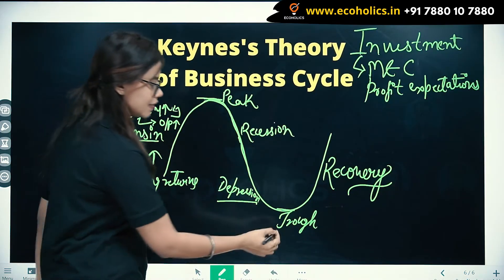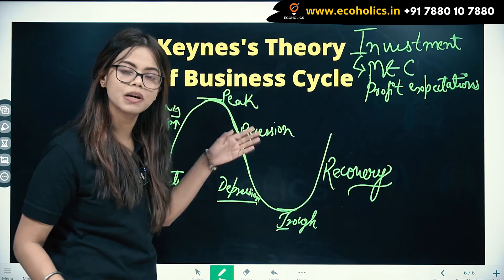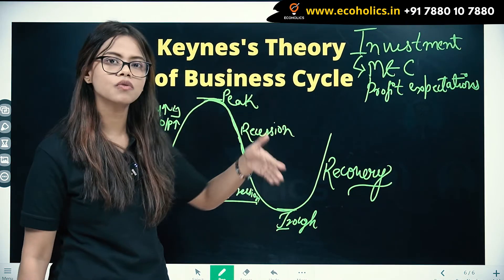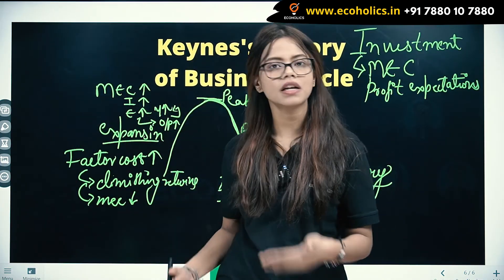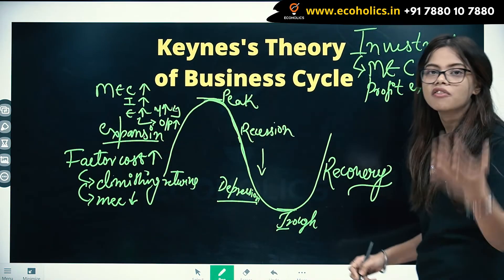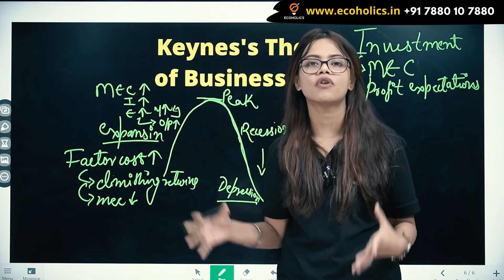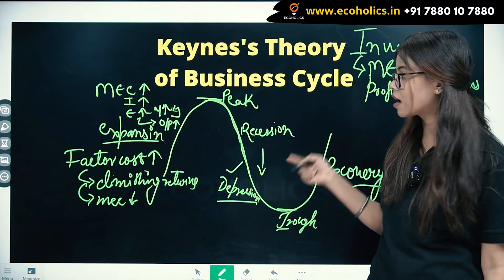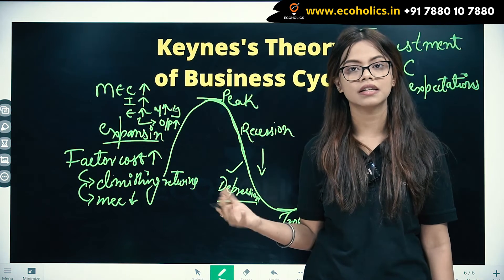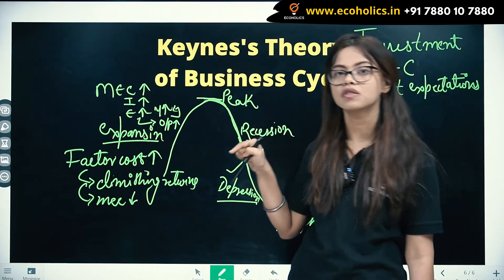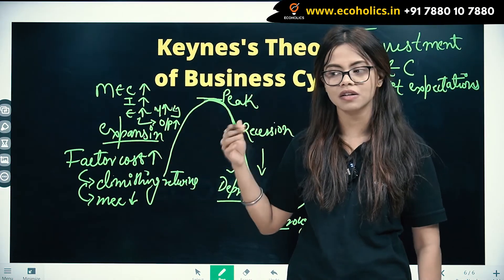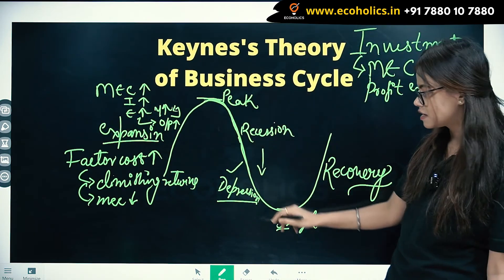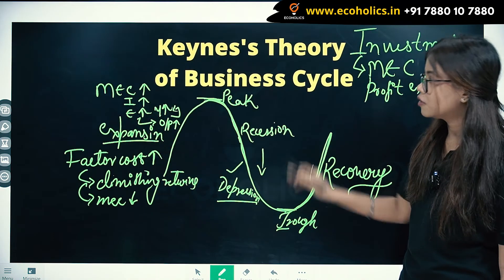At the trough, we've reached the last declining point — we cannot go lower. Who comes to the rescue? The government comes, because the private sector won't invest since they are not expecting profit. The government jumps in and starts investing, pumping money into the economy. A little bit of demand is created, and seeing this demand, investors think about jumping back in and starting productive activities. They can see demand, they expect profits, their MEC is high again, and we move from the depressive state toward the recovery stage.